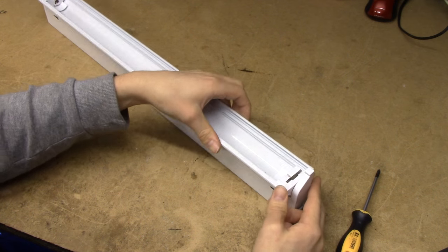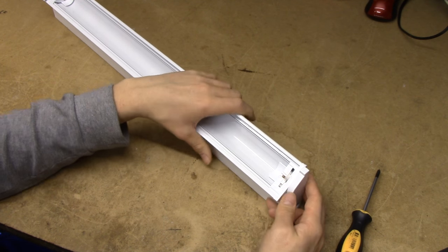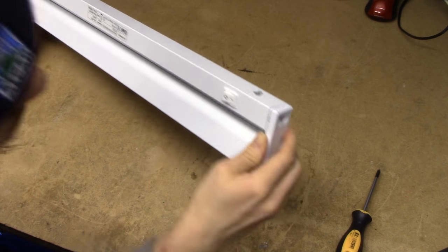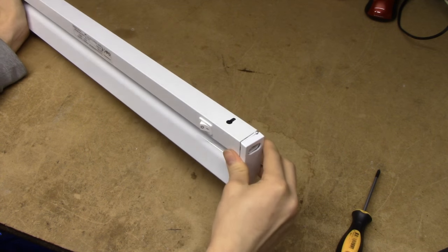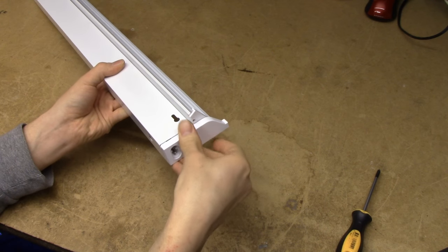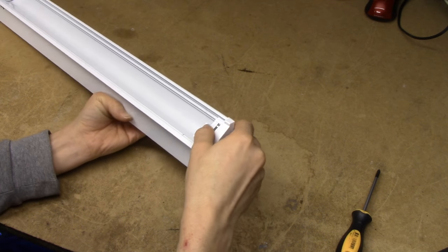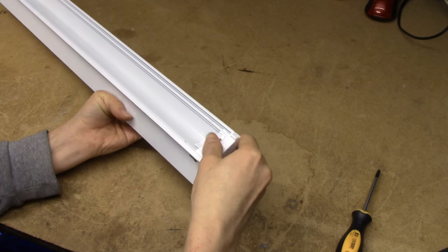All right, screws are out. Is this going to come apart? Well it's certainly loose now, but it's not coming apart. Ah, there we go. These plastic ends just pop off and it seems you really do need to undo those screws.